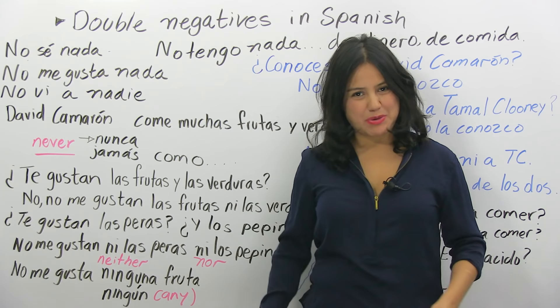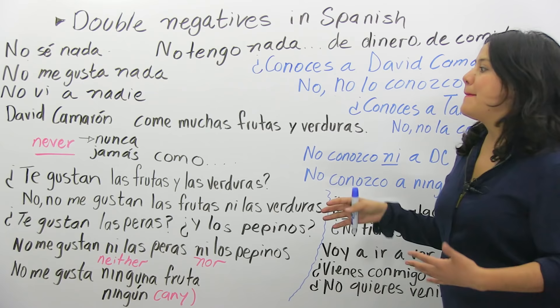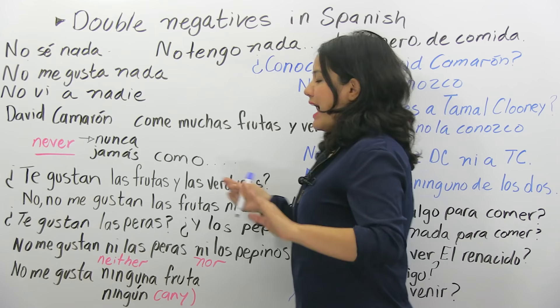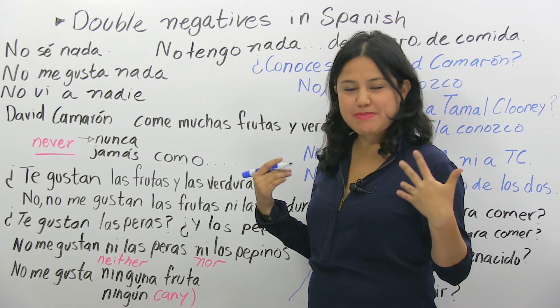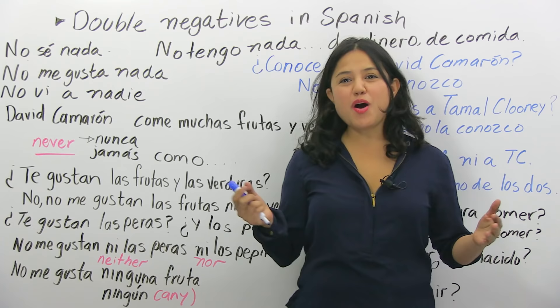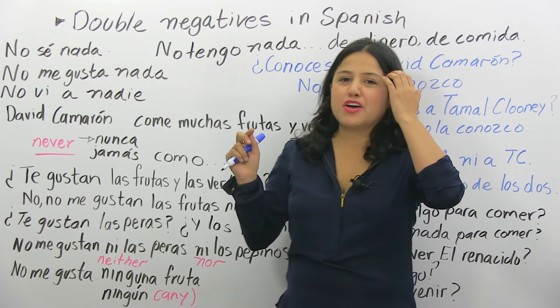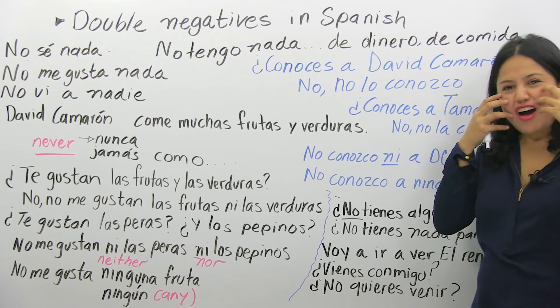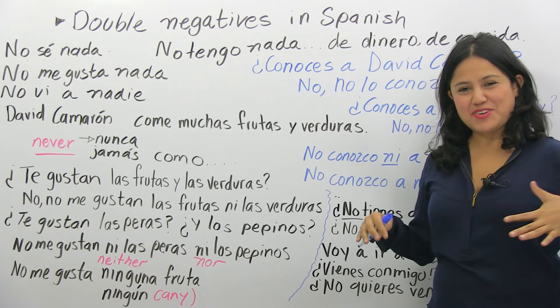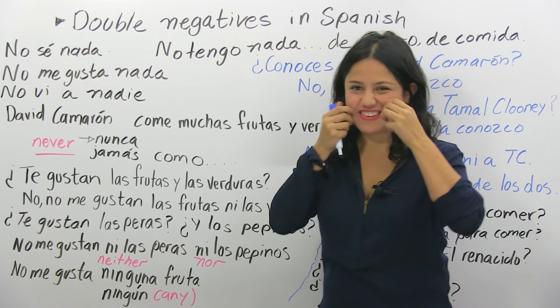Let's start with the first example on the board — puse en el pizarrón para entender un poco más. I'll introduce you to David Camarón. David Camarón come muchas frutas y verduras — David Camarón eats lots of fruits and vegetables. That's why his cheeks are kind of chubby and pink. He looks healthy and his cheeks even look like you want to squish them.